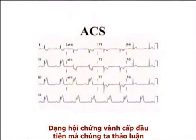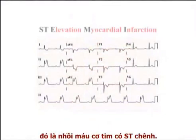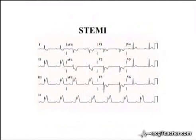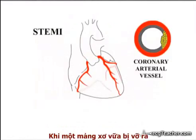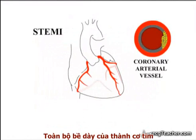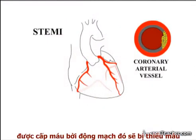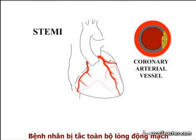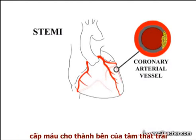The first type of acute coronary syndrome we will deal with is termed ST elevation myocardial infarction, or STEMI for short. When an atheromatous plaque ruptures in a coronary vessel and the clot which forms completely obliterates the vascular lumen, the entire thickness of the myocardial wall supplied by that vessel becomes ischemic and is at risk of infarction. In the example shown here, the patient has developed a complete occlusion of the artery which supplies the lateral wall of the left ventricle.